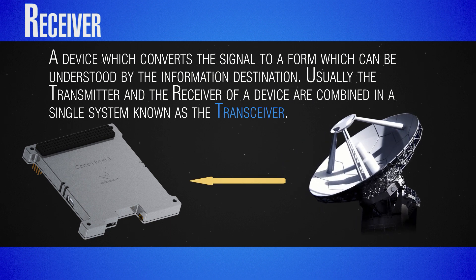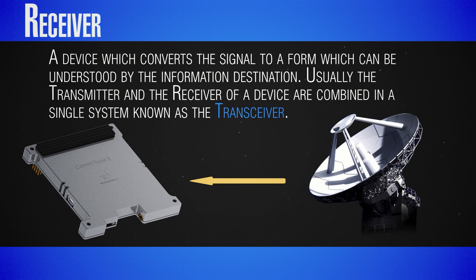The receiver performs the opposite operation of the transmitter. It converts the message back to its original form, which was originally the input of the transmitter. Basically, it converts the signal to a form which can be understood by the information destination.